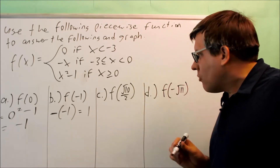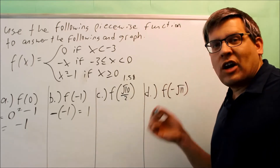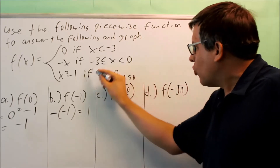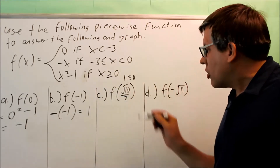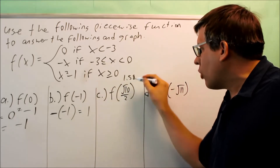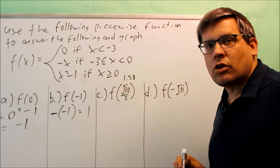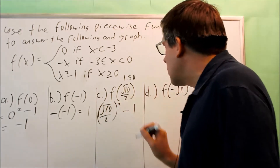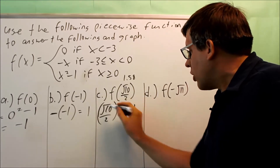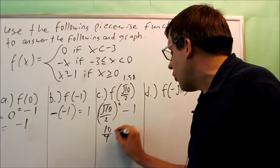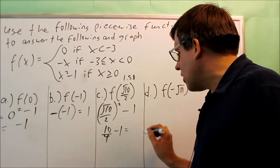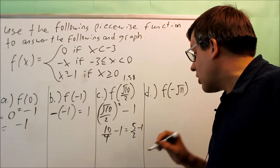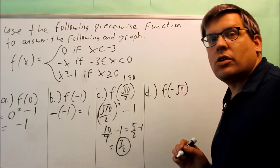Now we have f of square root of ten over two. You could use a calculator to get 1.58, but we know it's a positive number, so the only condition that allows positive numbers is the third one. We put square root of ten over two into x squared minus one: squaring gives ten over four, which reduces to five halves. Five halves minus one equals five halves minus two halves, which is three halves. So the answer for part c is three halves.